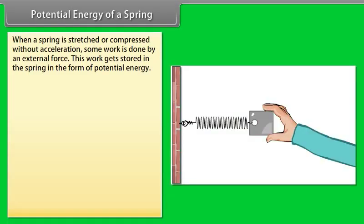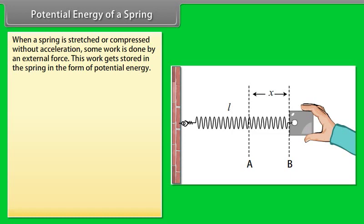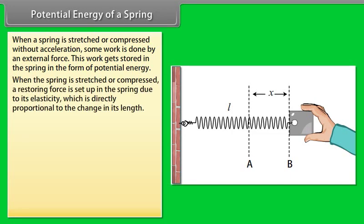Potential energy of a spring: When a spring is stretched or compressed without acceleration, some work is done by an external force. This work gets stored in the spring in the form of potential energy. When the spring is stretched or compressed, a restoring force is set up in the spring due to its elasticity, which is directly proportional to the change in its length. Restoring force is given by F is directly proportional to x, F is equal to minus kx, where K is equal to force constant of the spring.